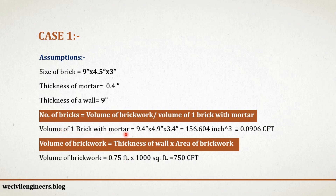The volume of one brick with mortar equals 9.4 inch. How did 9.4 come? I added the thickness of mortar to the size of brick — 9 plus 0.4 gives 9.4. Similarly, 4.5 plus 0.4 gives 4.9, and 3 plus 0.4 gives 3.4. If you multiply these three values, then you will get 156.604 cubic inch.